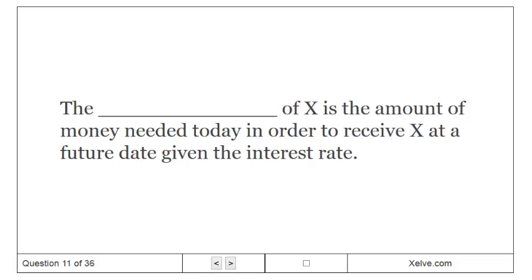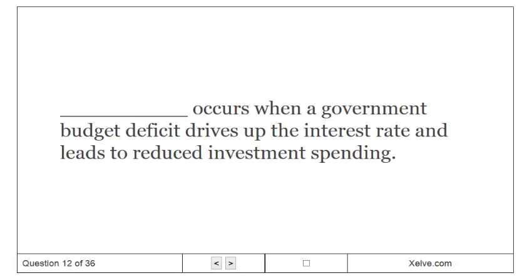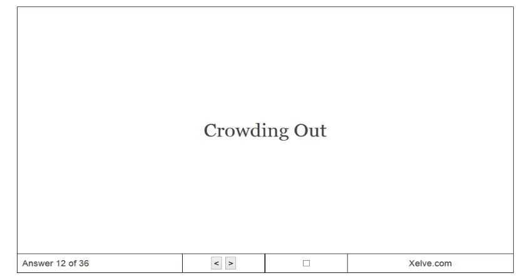The present value of X is the amount of money needed today in order to receive X at a future date given the interest rate.